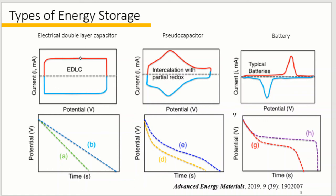For an electrical double layer capacitor, the CV curve should be rectangular and the GCD curve is completely linear. For a pseudocapacitor, the CV curve shows peaks that locate at the same position on the charge and discharge branch, and the GCD curve is non-linear without any obvious plateaus. For a battery, strong pairs of peaks can be observed on the CV curve with a separation in peak location, and a clear plateau can be observed on the GCD curve. The peaks on the CV curve and the plateau on the GCD curve correspond to the process when various redox reactions take place in a battery.